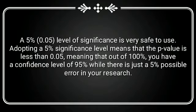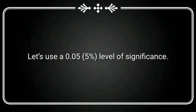A 5% (0.05) level of significance is very safe to use. Adopting a 5% significance level means that the p-value is less than 0.05, meaning that out of 100%, you have a confidence level of 95% while there is just a 5% possible error in your research. Let's use a 0.05 (5%) level of significance for this.